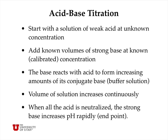In an acid-base titration, you typically start with a solution of weak acid at some unknown concentration, then add a known volume of strong base at a known concentration. The base reacts with the acid to form increasing amounts of its conjugate base. During the time when the concentrations of acid and conjugate base are comparable, you have a buffer solution and the pH changes very gradually. The volume continues to increase until you reach the endpoint, where the pH increases very rapidly.